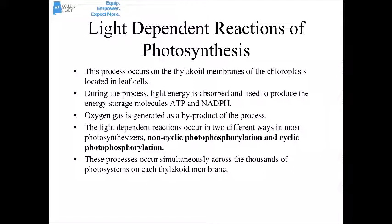The light-dependent reactions are the part of photosynthesis that occurs first and must happen in the light. This process occurs on the thylakoid membranes of the chloroplast, or on the folds of the cell membrane in bacteria. Light energy from the sun is absorbed and used to produce the energy storage molecules ATP and NADPH. Oxygen gas is made and released as a byproduct. The light-dependent reactions occur in two different ways: non-cyclic photophosphorylation and cyclic photophosphorylation, typically simultaneously across thousands of photosystems on each thylakoid membrane.